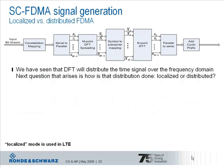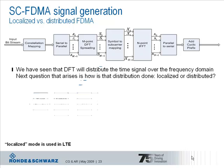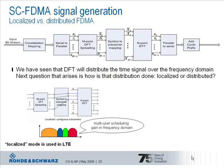The question is how subcarrier mapping is realized in the uplink. There are two possibilities, each with one advantage. First, we have localized mapping. In localized mode, the modulation symbols are assigned to adjacent subcarriers, as shown in the graph. This gives us the advantage of multi-user scheduling gain in the frequency domain. For localized subcarrier mapping, Single Carrier FDMA is named Localized FDMA.